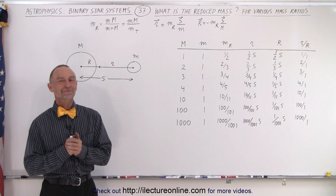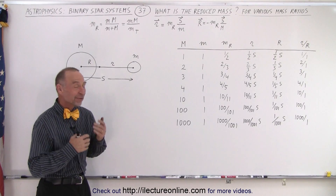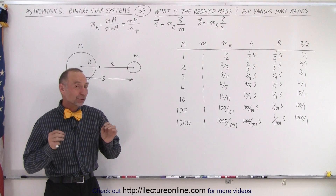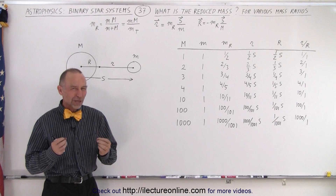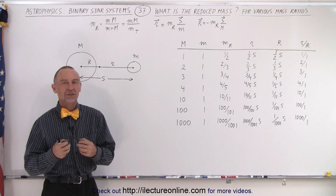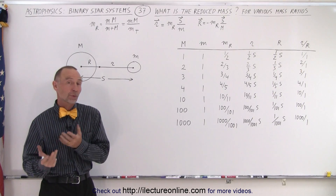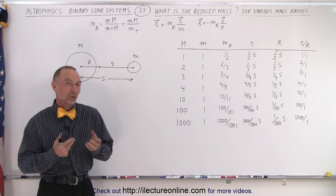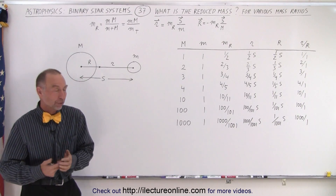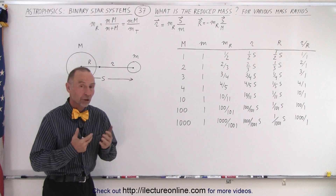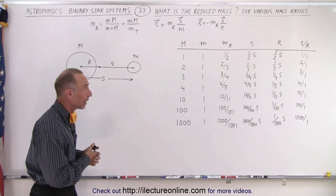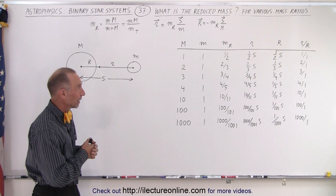Welcome to ElectronLine, and one final video on reduced mass to really understand the concept and the relationship between mass and the radius of the orbits of the small and large object in the binary system.